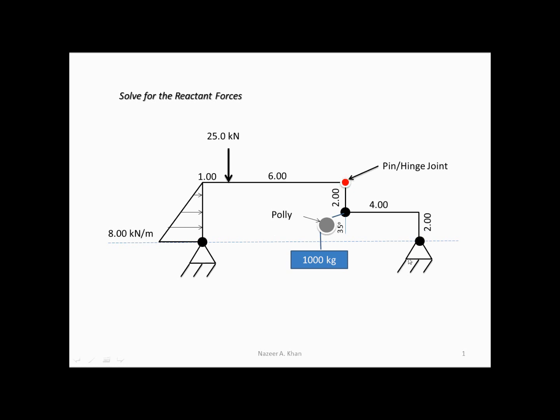When you replace supports you replace them with reactant forces. Each one, when we create an FBD, we are going to replace with a horizontal and vertical force, and that is why this has four reactant forces. We know how to convert a mass into a force: multiply by 9.81 meters per second squared to get newtons, then divide by a thousand to get kilonewtons — so this will turn out to be 9.81 kilonewtons.